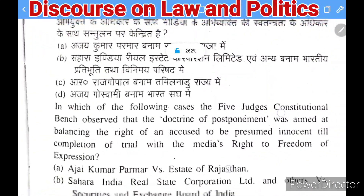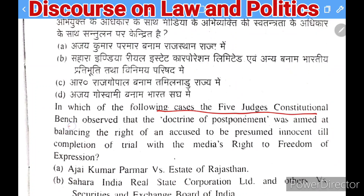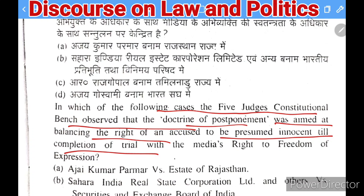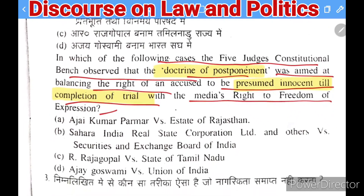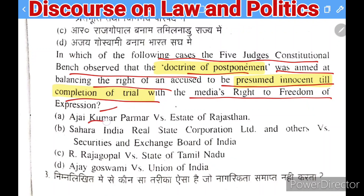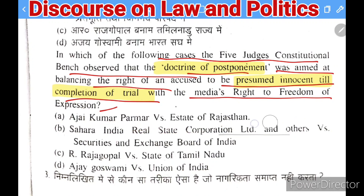Next question: in which case did a five-judge constitutional bench observe that the 'doctrine of postponement' was aimed at balancing the right of an accused to be presumed innocent till completion of trial with the media's right to freedom of expression? The options are Ajay Kumar Parmar vs State of Rajasthan, Sahara India Real Estate Corporation vs SEBI, Raj Gopal vs State of Tamil Nadu, and Ajay Goswami vs Union of India. The right answer is Sahara India Real Estate Corporation Limited vs SEBI.